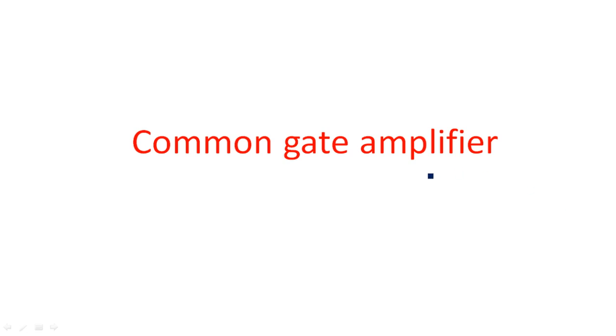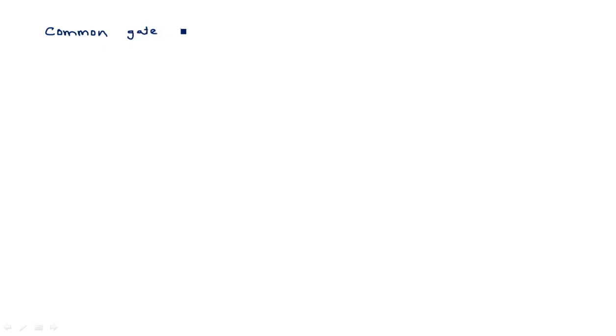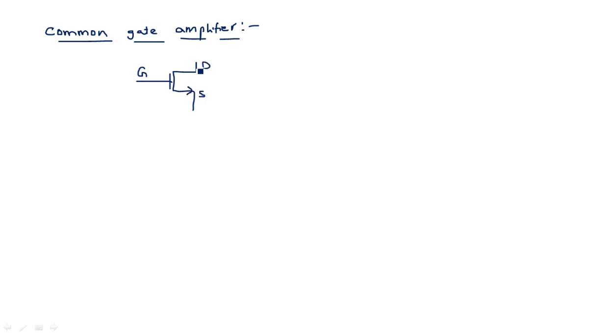In this video you are going to learn about the common gate amplifier. This is the third configuration in MOSFET transistor configurations, alongside common source amplifier and common drain amplifier. In the common gate configuration, the gate terminal is common between input and output.